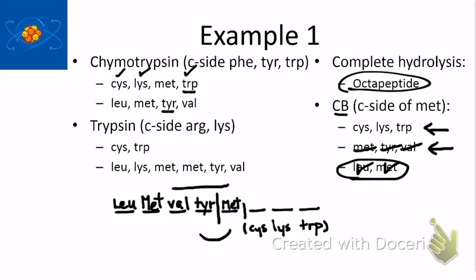The only bit of information I haven't really used yet is this trypsin data. And, in the trypsin data, you'll notice that it's the C side of arginine or lysine. And, the fragment, one of the fragments that I get is this one. It's the two amino acid fragments, cysteine and tryptophan.